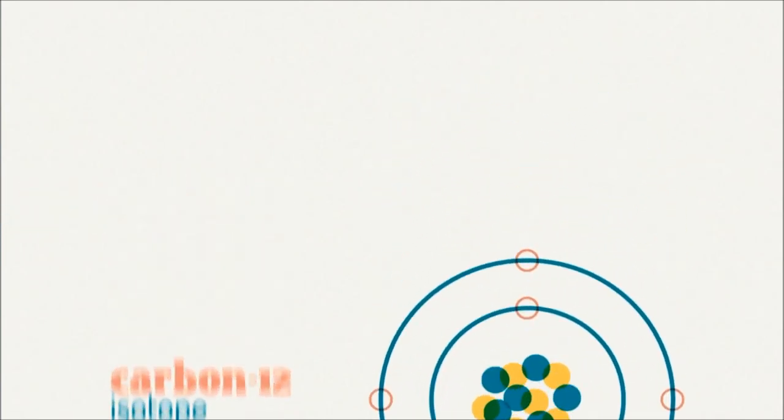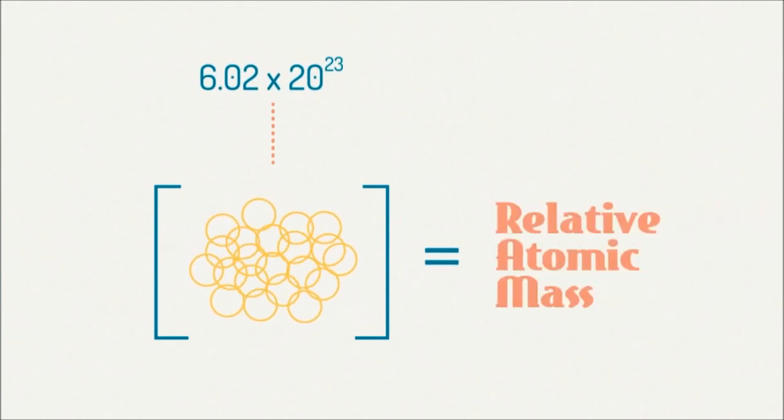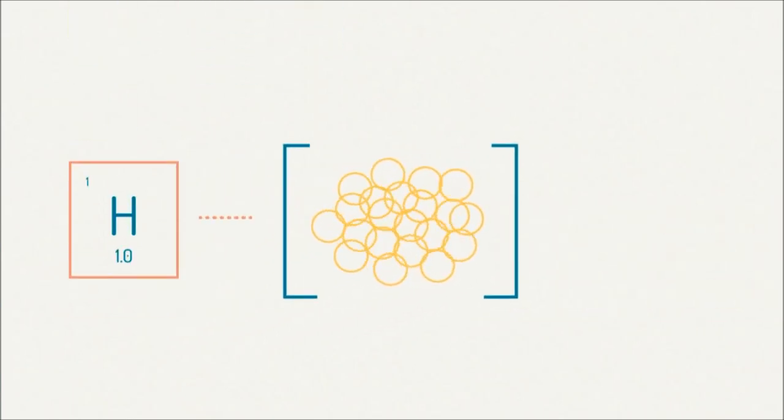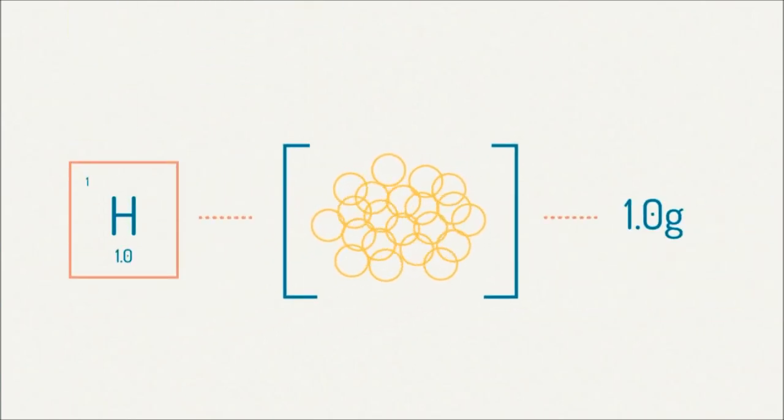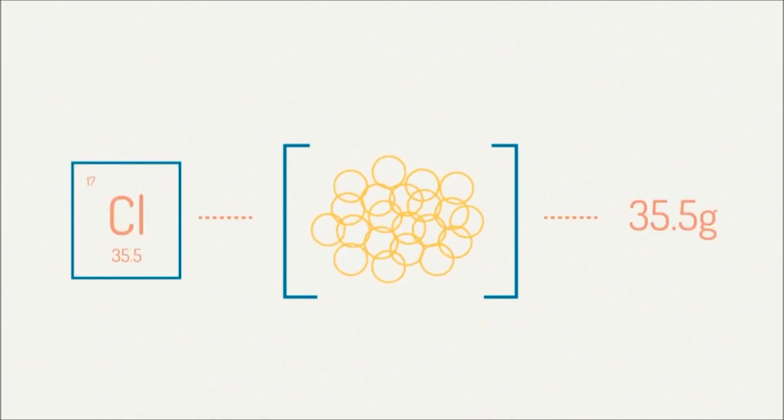For atoms, the mass of Avogadro's number of particles is equal to their relative atomic mass in grams. So, the mass of Avogadro's number of hydrogen atoms is 1 gram, and the mass of Avogadro's number of chlorine atoms is 35.5 grams.